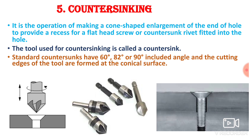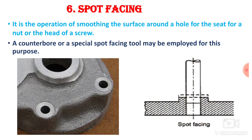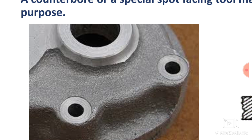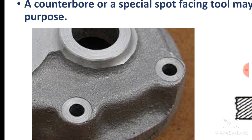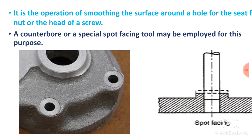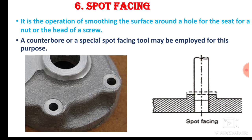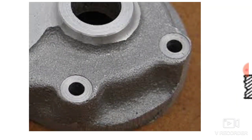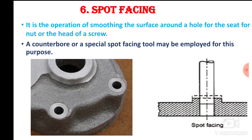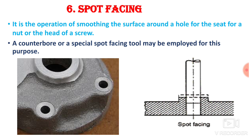The next operation is spot facing. It is the operation of smoothening the surface around a hole to provide a seat for a nut or the head of a screw. In spot facing, the material around the hole is removed. A counter bore or a special spot facing tool may be employed for this purpose. Here you can easily place a washer — it provides a seat for the nut or head of the screw.